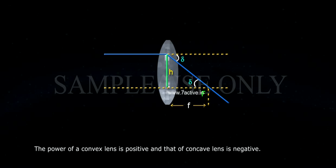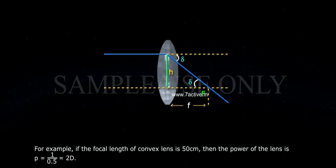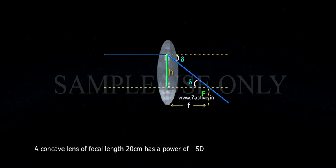The power of a convex lens is positive and that of concave lens is negative. For example, if the focal length of a convex lens is 50 cm, then the power of the lens is P equals to 1 by 0.5 equals to 2D. The concave lens of focal length 20 cm has a power of minus 5D.